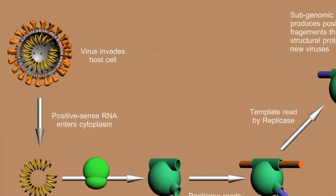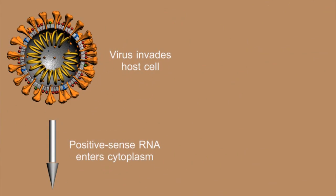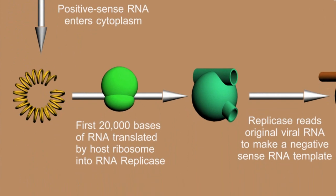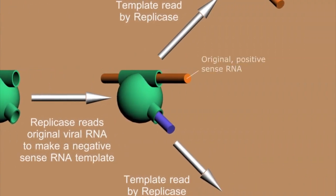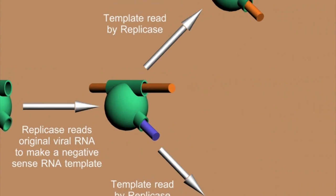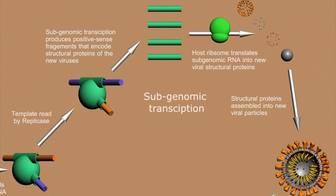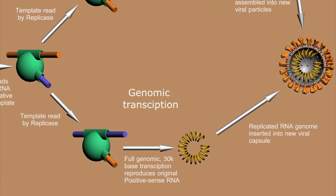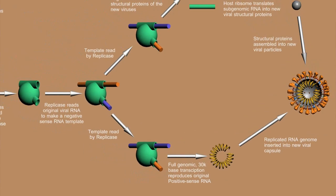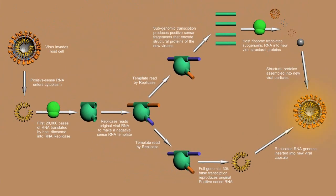To summarize: the viral particle invades the host cell and delivers its positive-sense RNA to the cell cytoplasm. The host cell ribosome reads the first 20,000 bases and assembles an RNA-dependent RNA polymerase or RNA replicase. The replicase reads the original viral RNA to produce a negative-sense copy or template of the genetic code. This template is then used to produce short-segment subgenomic sequences of positive-sense RNA, read by the host ribosome to reproduce the structural proteins of the viral capsule. Alternatively, the entire template can be translated into a new copy of the original RNA viral genome. The structural proteins are then assembled around the viral RNA, producing a new viral particle.